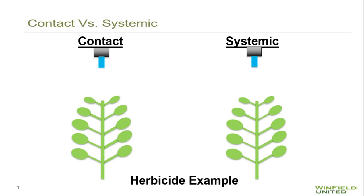Droplet size is determined by the type of pesticide. There are two main categories. Contact type chemistries only control where they hit on the leaf, whereas systemic type chemistries will actually move throughout that entire plant.